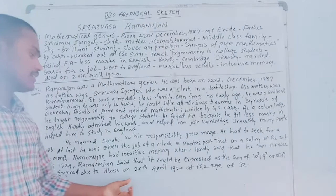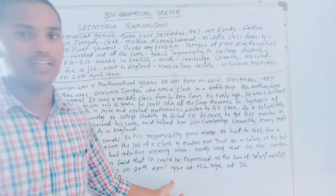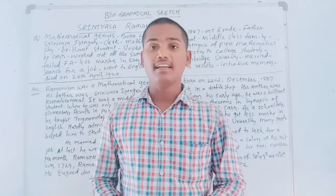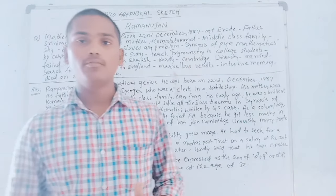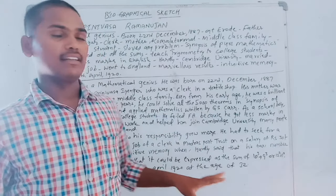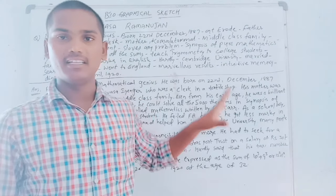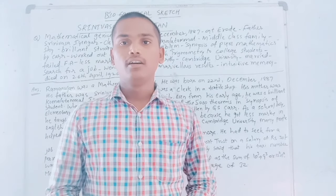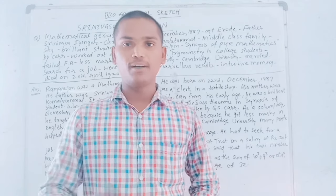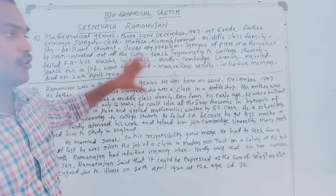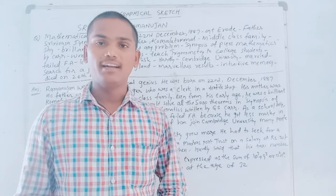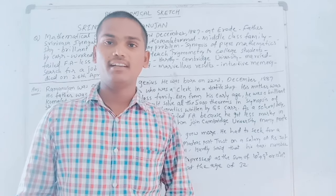He died due to illness on 26th April 1920 at the age of 32. That is the way to write a biographical sketch. Students, I hope you can understand it. If you don't have an idea about how to write a biographical sketch, go back and watch Part 1. Write down this biography in your notebook and learn it. We will meet again in our next class — until then, keep smiling and happy. Thanks for watching this video.